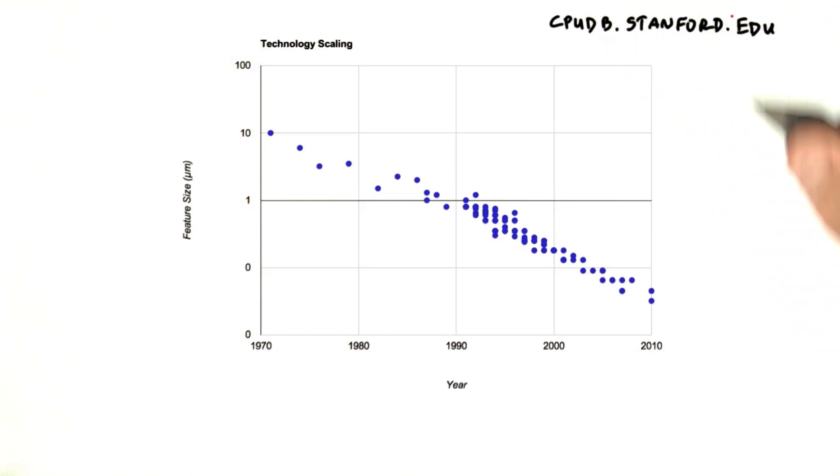This graph is from Stanford's CPUDB project. Thanks guys. What it shows is the feature size of processors over time, where the feature size is the minimum size of a transistor or wire on a chip.